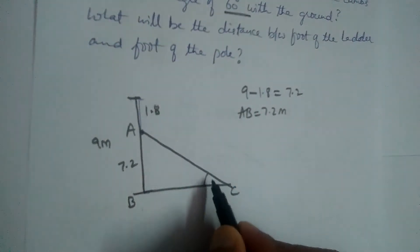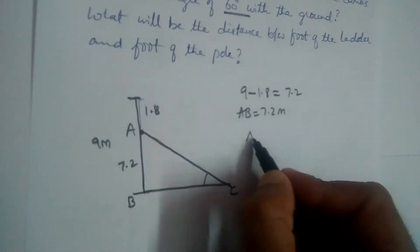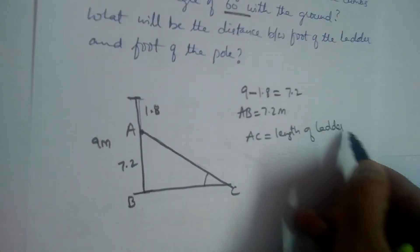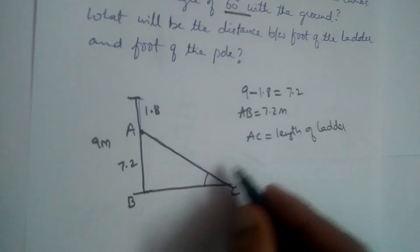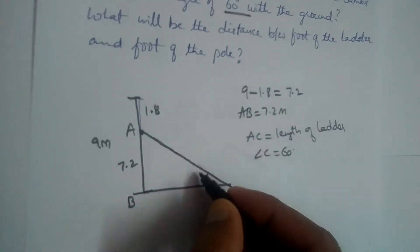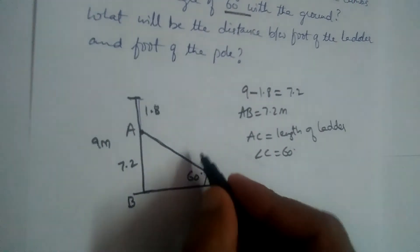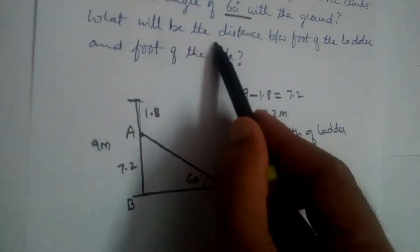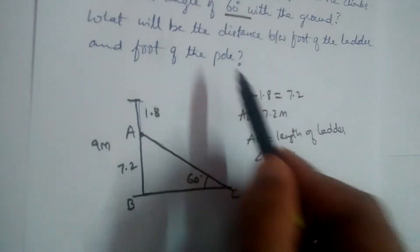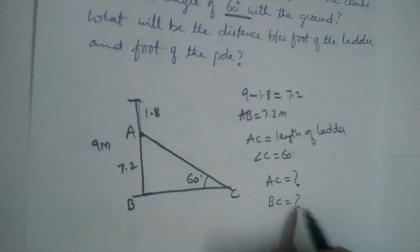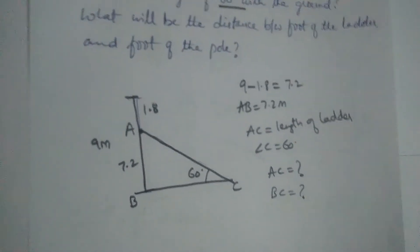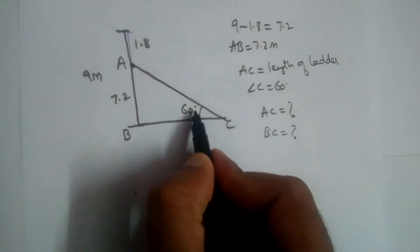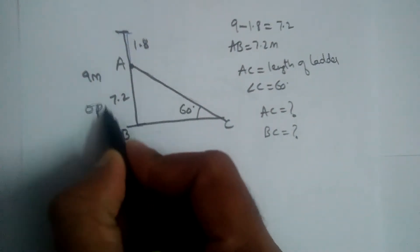The ladder is making 60 degrees with the ground. AC is the length of the ladder, and angle C is equal to 60 degrees. We need to find AC — the length of the ladder — and also BC, the distance between the foot of the ladder and the foot of the pole.